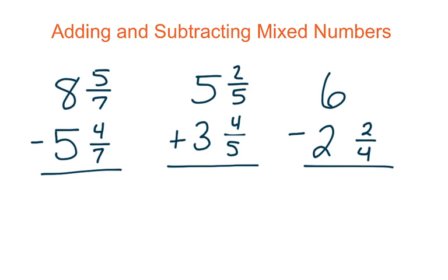Go ahead and answer the first question. Make sure you identify whether it's an addition or subtraction problem and then solve. For this first problem we're doing subtraction. 5 sevenths minus 4 sevenths gives me 1 seventh, and then 8 minus 5 gives me 3. That's my final answer.